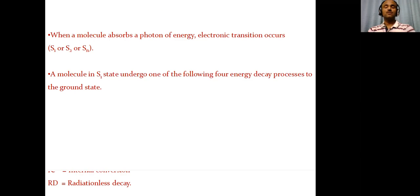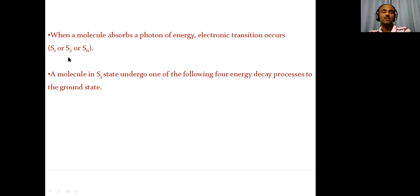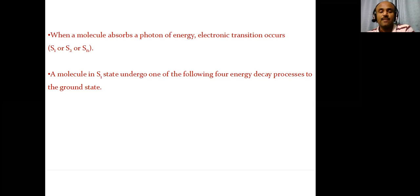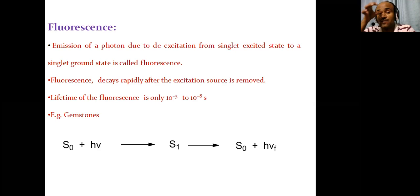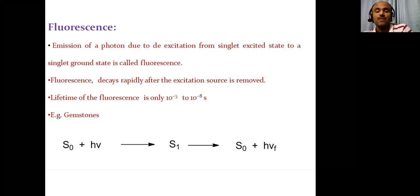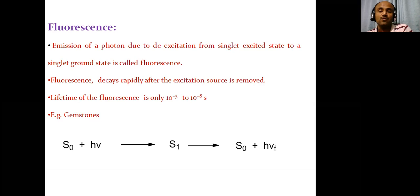When a molecule absorbs a photon of energy, electronic transitions occur such as to S1, S2, or higher states. A molecule in the singlet state undergoes four different decay processes. First, fluorescence: emission of a photon during de-excitation from the singlet excited state to the ground state is called fluorescence. Fluorescence decays rapidly after the excitation source is removed. The lifetime of fluorescence is only 10⁻⁵ to 10⁻¹ seconds.